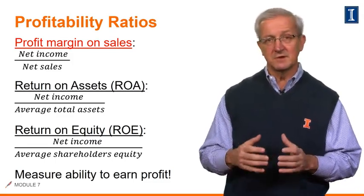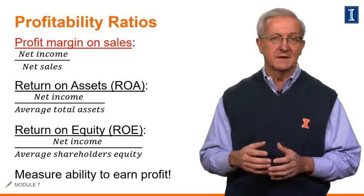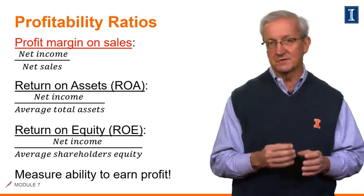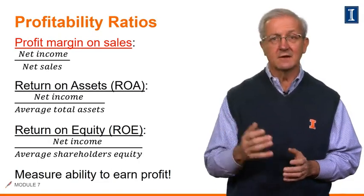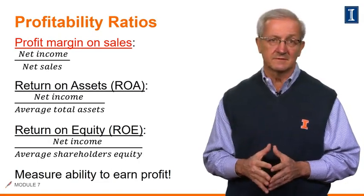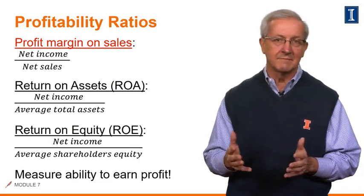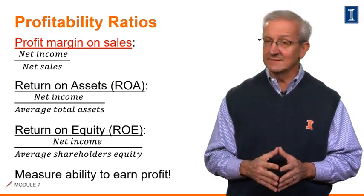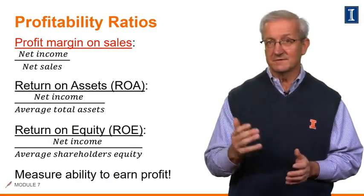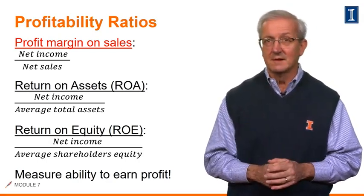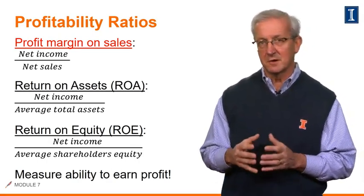ROE is a way to measure the earnings power of our company that is generated from the resources that the shareholders provide. This calculation is basically net income divided by average shareholders' equity. In essence, all three of these ratios measure the ability of the company to earn a profit.